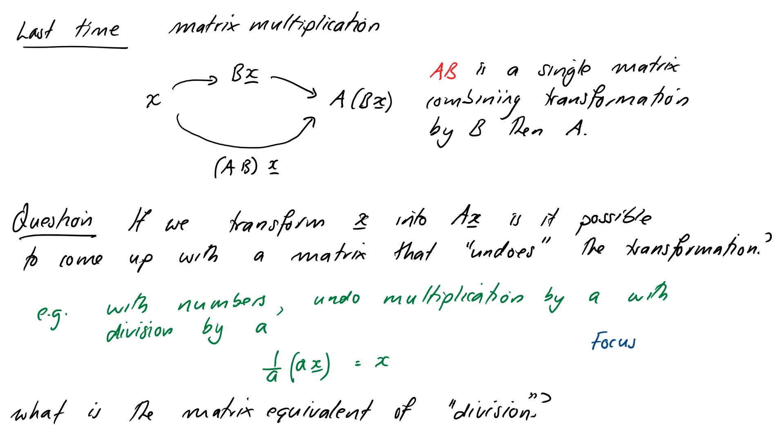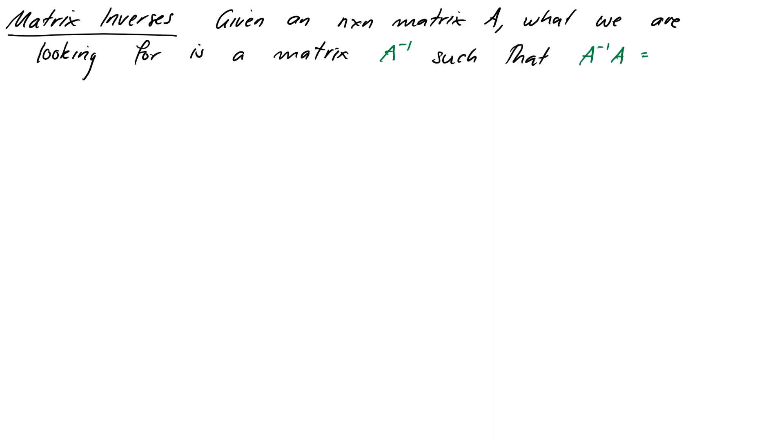Just one note, we're only really going to be looking at square matrices today so we'll come back again to rectangular ones shortly. Okay so the word that we're after here is we're looking for a matrix called a matrix inverse. So given an n by n matrix A what we're looking for is a matrix which we'll call A inverse such that A inverse times A equals I, the identity.